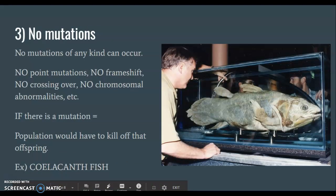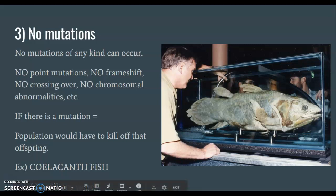Number three is no mutations of any kind — you cannot change genetically whatsoever. No point mutations, no frame shifts, no crossing over in the chromosomes, no chromosomal abnormalities. If there is a mutation within the population, somehow that organism is eliminated so the mutation isn't passed on. A classic example of no mutations is the coelacanth, a fish that's been around for 400 million years and has not evolved. We still have the same coelacanth as a 400-million-year-old fossil, and you can still find a living one today in South Africa.